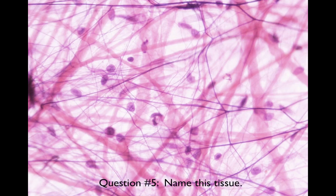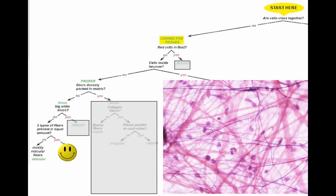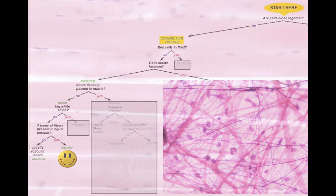At first glance, this kind of looks like a mess. The cells are not close together. They are widely spaced with material in between. Are the cells in fluid? No. Are the cells inside lacunae? Do you see those little depressions? Because I sure don't. Do you see fibers densely packed in a matrix? Actually, no. Are they big white blobs? No. It's certainly not big white blobs. The answer is you see three different types of fibers present in equal amounts. This is areolar tissue. It's also known as loose fibrous connective tissue. You'll see this tissue a lot, especially in all of your epithelial tissue slides. If you look underneath the epithelia, you usually see this tissue. It's really common. It underlies most epithelia throughout the body.